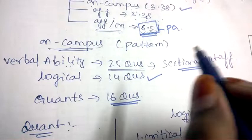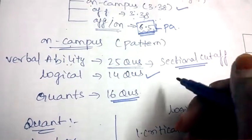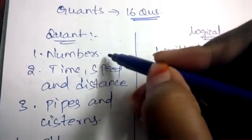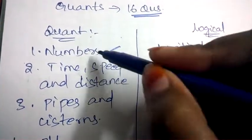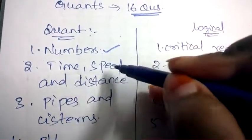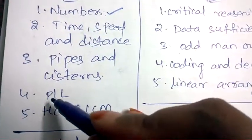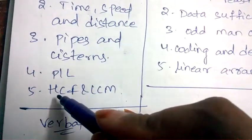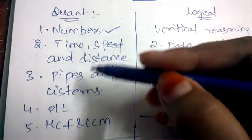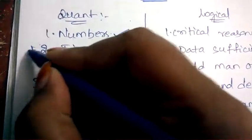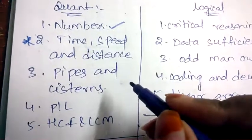Coming to the topics of quantitative aptitude, they'll be asking questions from numbers, time speed and distance, pipes and cisterns, profit and loss, HCF and LCM. Which are the important topics out of these five? Time speed and distance is the most important topic.